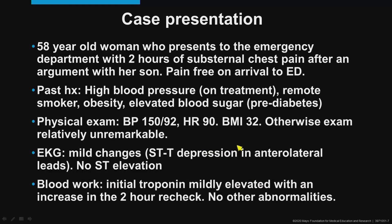Let's look at a case. This is a 58-year-old woman who comes to the emergency room with two hours of chest pain after an argument with her son. She comes in pain-free. She has high blood pressure on treatment, smoked in the past, and has prediabetes as well as obesity. She's hypertensive on exam, her BMI is elevated, and otherwise the exam is unremarkable.